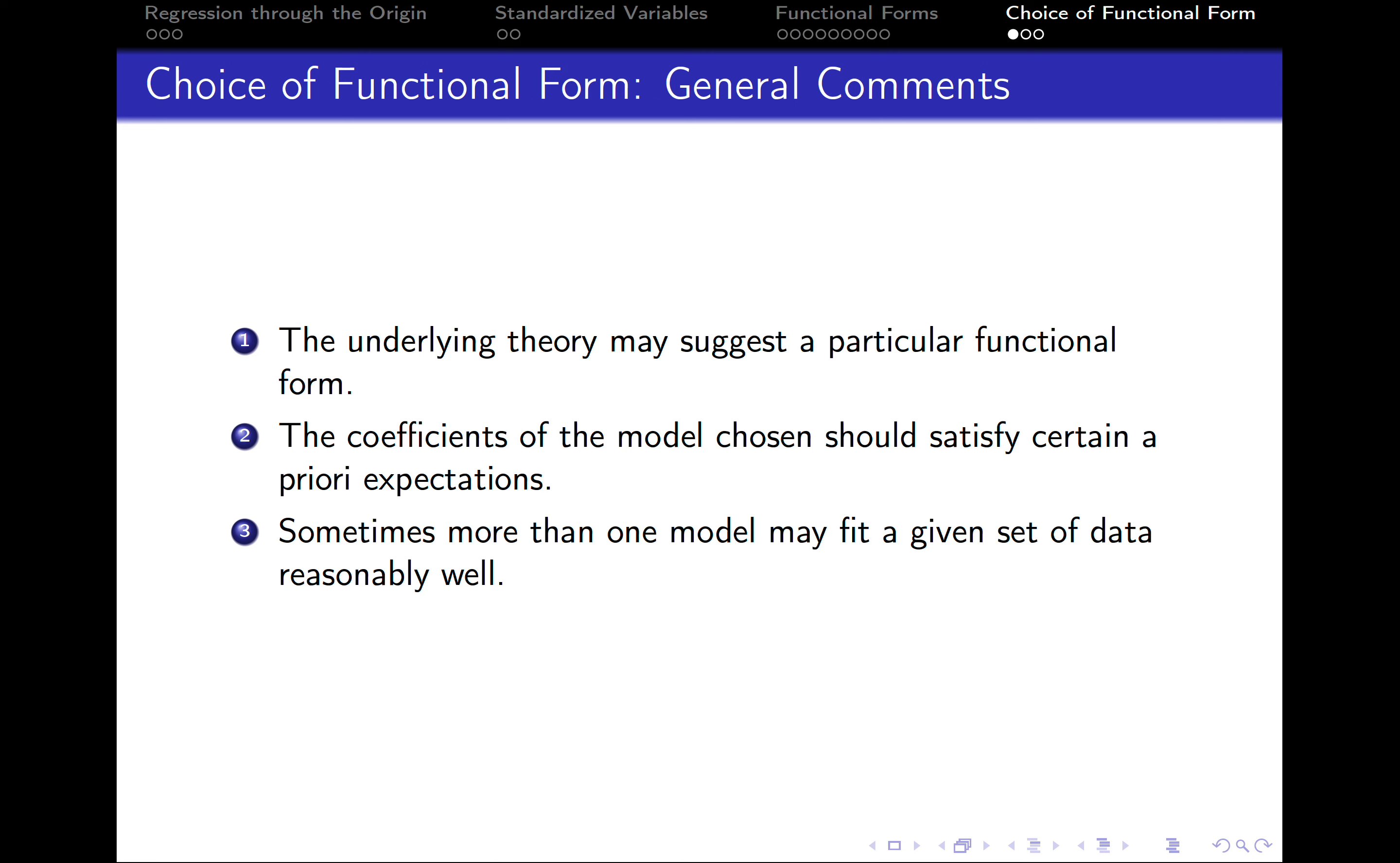Another thing is that the coefficients of the model chosen should satisfy certain a priori expectations. For example, if we would like to check how demand for a certain product is affected by its price, logically and from theory we know that the relationship should be negative. Higher price leads to lower demand, therefore the coefficient must be negative. However, if you get a positive coefficient, that means that probably the functional form you've chosen is not the correct one and you should look for another functional form.